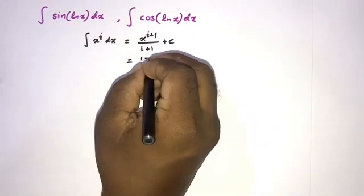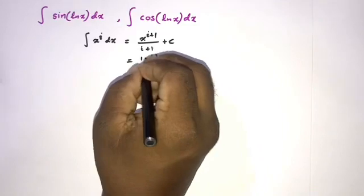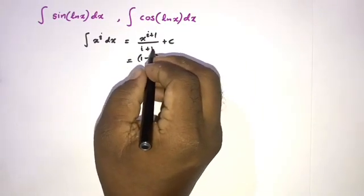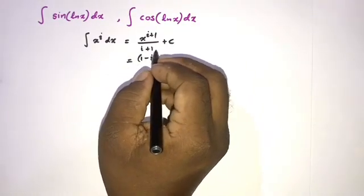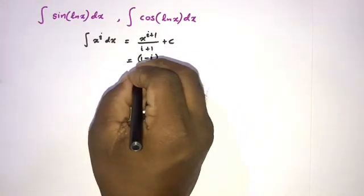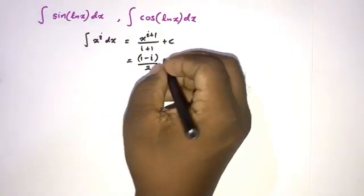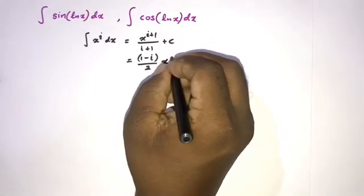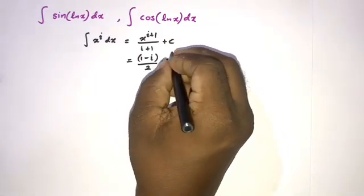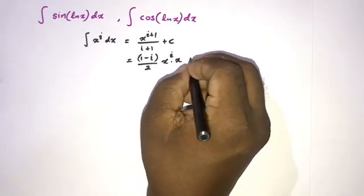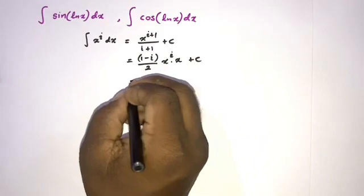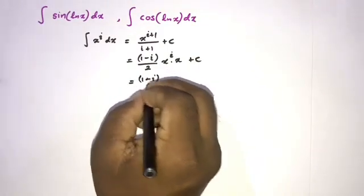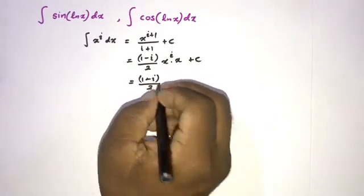So we write (1 minus i) over (1 plus i)(1 minus i). Since i² equals minus 1, the denominator becomes 2. We now have (1 minus i) over 2, and x^(i+1) can be written as x^i times x, plus c.